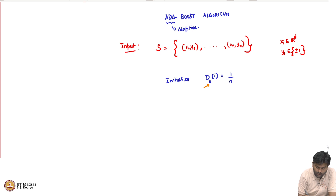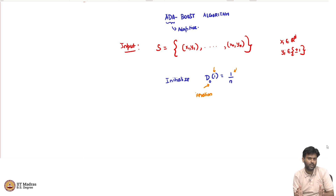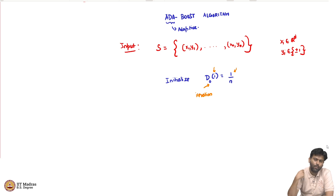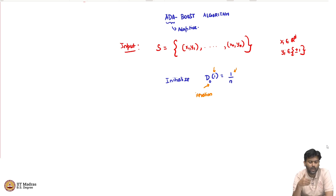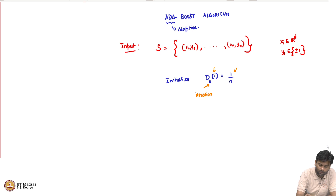What is d_0(i)? The subscript zero indicates the iteration number. At initialization, every data point i gets a uniform weight of 1/n. We create a bag from the original dataset based on these weights — if the weights are all the same, every point has a 1/n chance of being in the bag, which is essentially uniform sampling with replacement. This is only for initialization. The key idea in boosting is that we are going to change this distribution at every round.